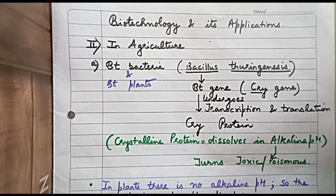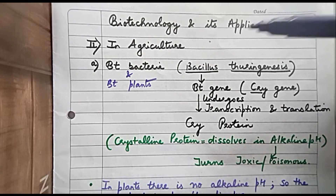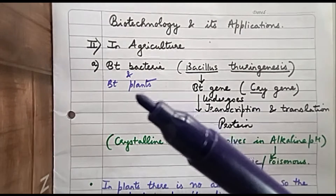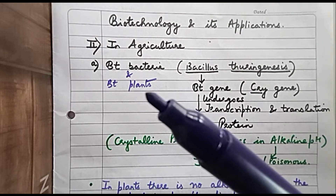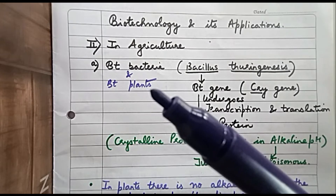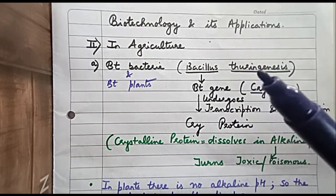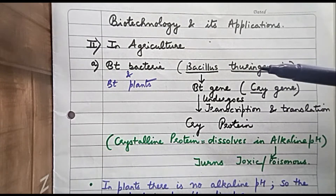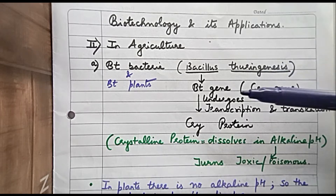In this video we will discuss biotechnology and its applications in agriculture. Specifically, we move to Bt bacteria and Bt plants. First we will see what Bt is — the name of a bacteria: Bacillus thuringiensis. In this Bacillus thuringiensis bacteria, there is a gene known by the name of the Bt gene.